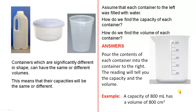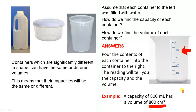For example, let's assume you poured one of those containers into here and the capacity was 800 millilitres — let's say the water went up to there. Therefore the volume has to be 800 cubic centimetres. And that's how you link capacity and volume.